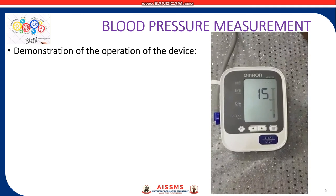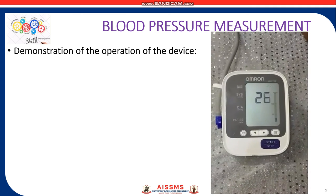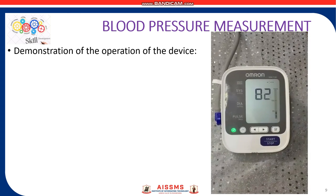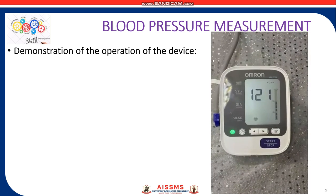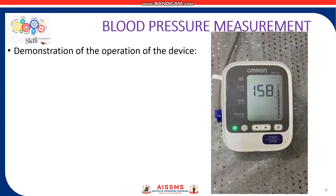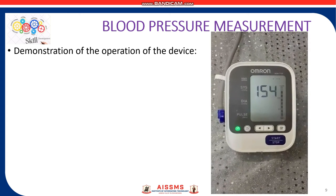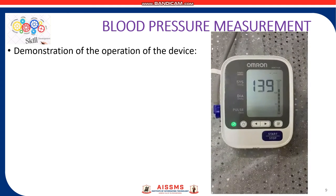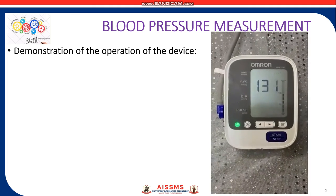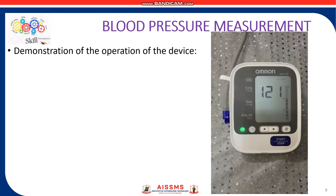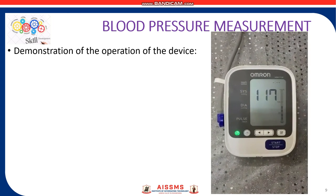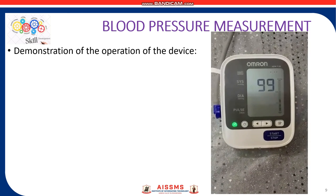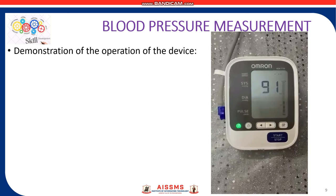Please note that it is important to sit correctly while measuring blood pressure. Sit on a chair with your legs uncrossed and your feet flat on the floor. Sit upright with your back straight, with your back and arm being supported. The arm cuff should be placed on your arm at the same level as that of your heart.